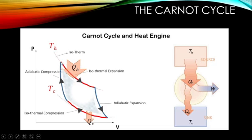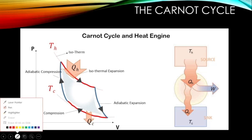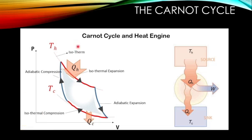It starts from a temperature and undergoes isothermal expansion. As you can see in the diagram, it undergoes an isothermal expansion where the volume builds up — the volume gets expanded while pressure reduces — keeping constant temperature. In this process, heat will be absorbed from a hotter reservoir.